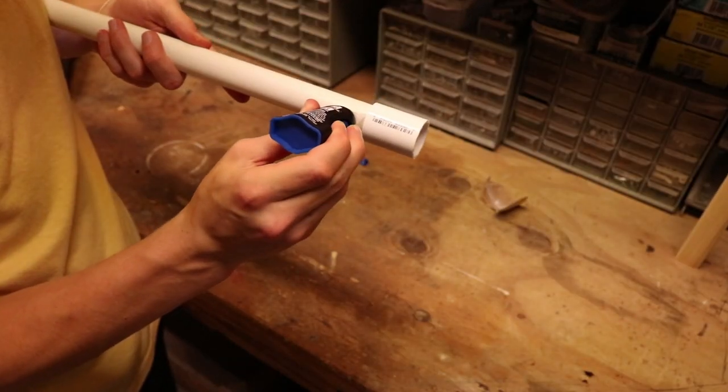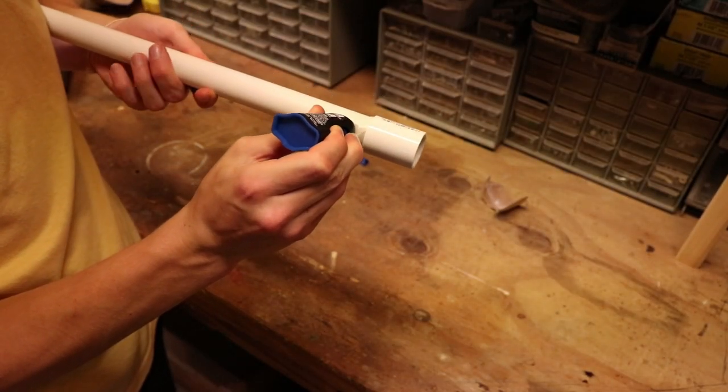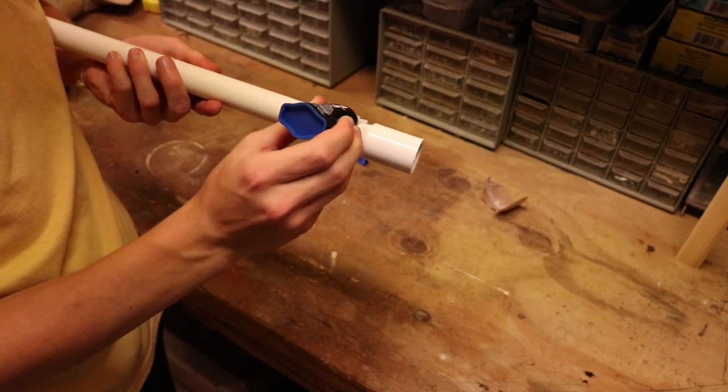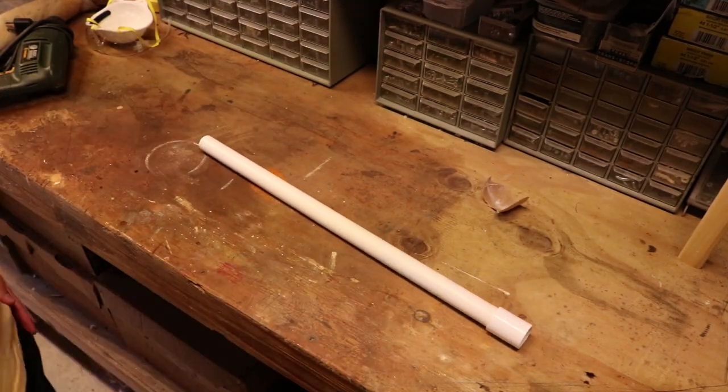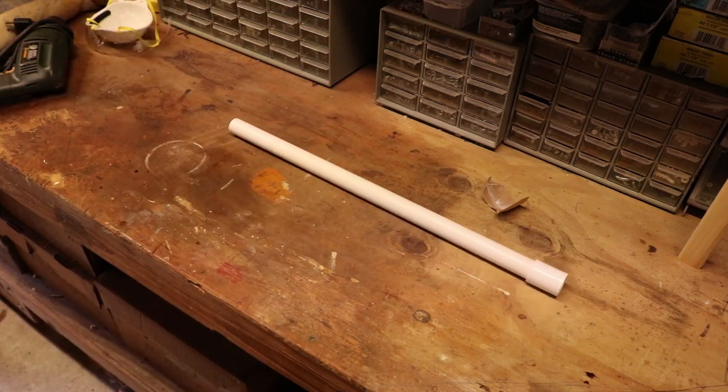And now put even more super glue around the bottom side ring of the coupler. You can never be too careful. And now set it down and let the super glue dry for at least 5 to 10 minutes.